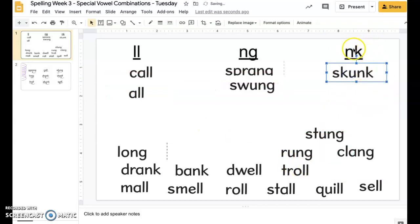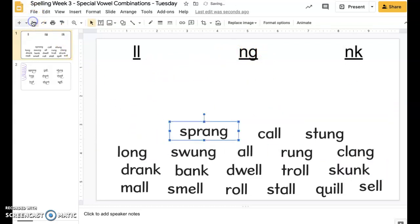If they end with the N-K, they go here. N-G, they go here. L-L, they go there. And when you're done, just make sure all the words in each group match the spelling that's there. So, that's how you do screen one.